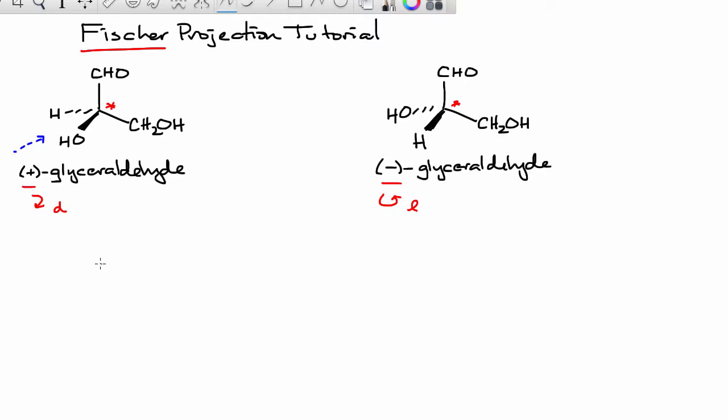In a Fischer projection, we're going to draw a cross. We have a vertical line, and those are going to signify bonds that are projected behind the plane of the board. Then we have a horizontal line, and those are going to be bonds that are projected out towards us. This is equivalent to the following: the vertical lines are going back, the horizontal lines are projected out towards us.